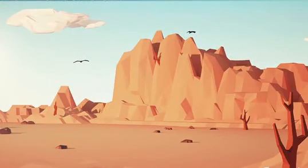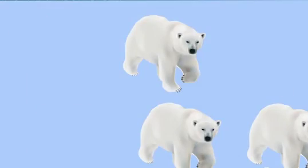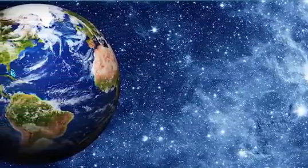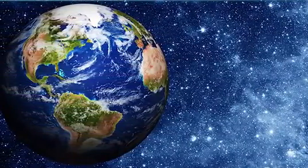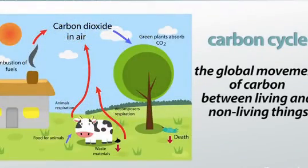Precipitation increases in some areas causing mass flooding, while other areas have dried up, decreasing crop yields. Animals like polar bears and seals have decreased drastically in number due to these changes in climate. Although this bleak scenario is somewhat far off, it's a real consequence of disrupting the carbon cycle — the global movement of carbon between living and non-living things.